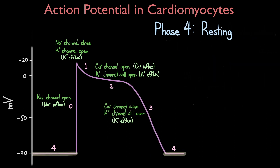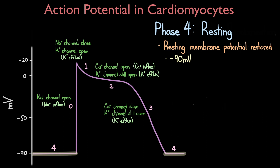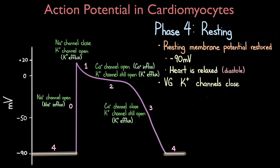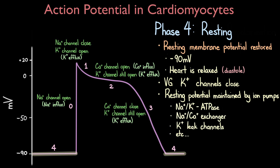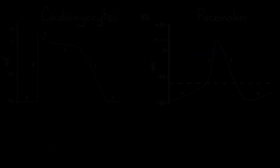The fourth phase is called the resting phase. The resting membrane potential is restored to around minus 90 millivolts and the heart is in diastole, the relaxed phase of the cardiac cycle. When the resting membrane potential reaches minus 90 millivolts, the potassium channels close. The resting membrane potential is maintained by different ion pumps in the cell's membrane, which maintain an equal inward and outward current of ions, helping keep the intracellular concentration of ions constant. Such ion pumps include the sodium-potassium pump, potassium leak channels, and sodium-calcium exchangers.